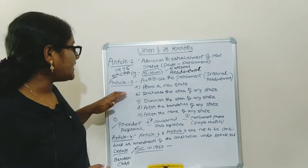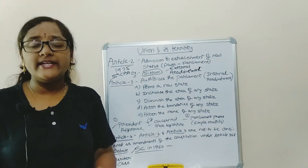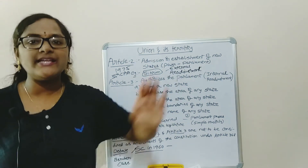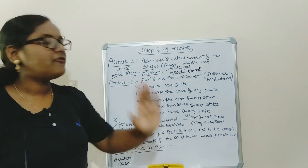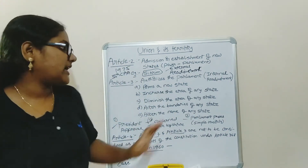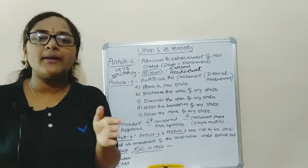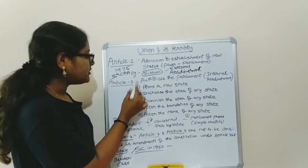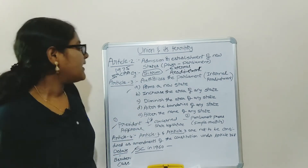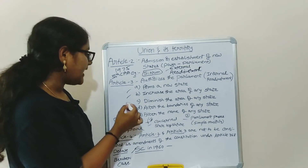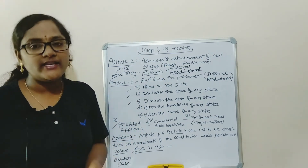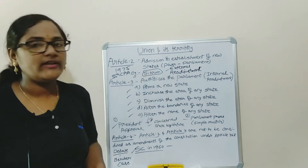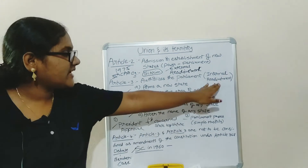Moving on to Article 3, which is about internal readjustment — whereas Article 2 is about external readjustment, meaning acquiring territory from outside and forming it as a new state. For internal readjustment, the power has also been given to Parliament. It authorizes Parliament to form a new state within the country, increase the area of any state, diminish the area of any state, alter the boundaries of any state, and alter the name of any state.